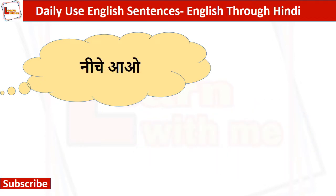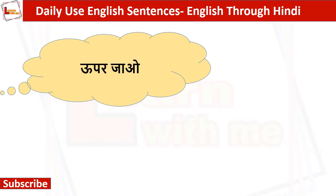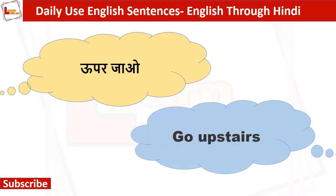नीचे आओ — Come downstairs. ऊपर जाओ — Go upstairs.